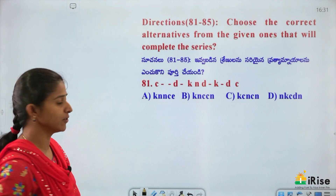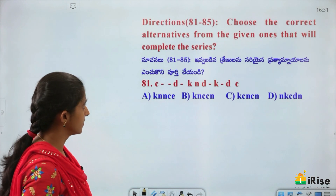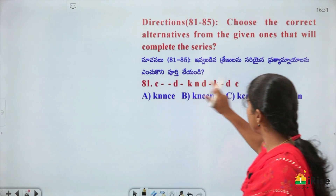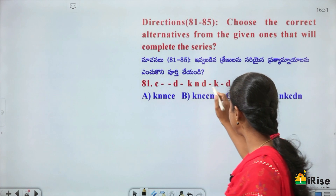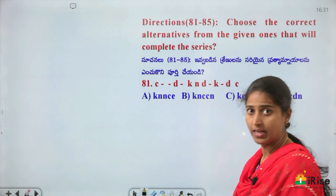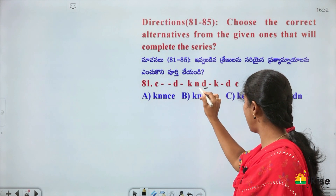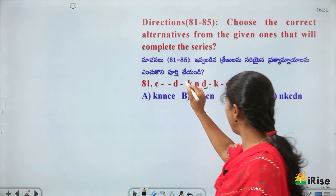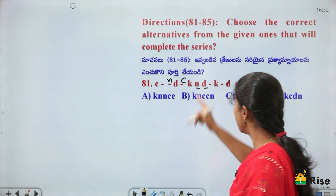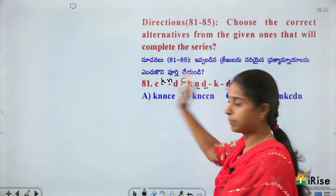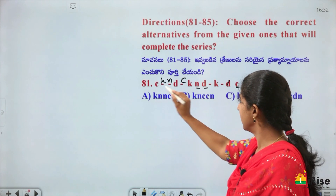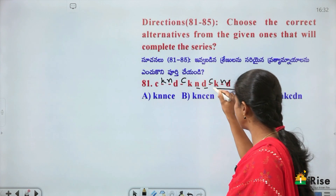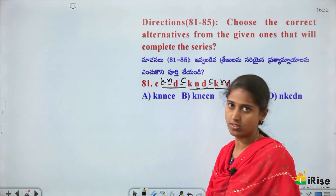Complete the series: C, D, K, N, D, ?, K, ?, D, C. The repeating pattern is K, N, D, C. Looking at the sequence: C is before D; D is after C; N is before K; the pattern repeats as K, N, D, C cycling. The blanks are filled by following this cycle.